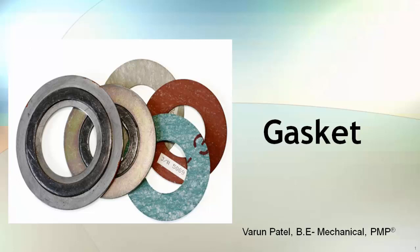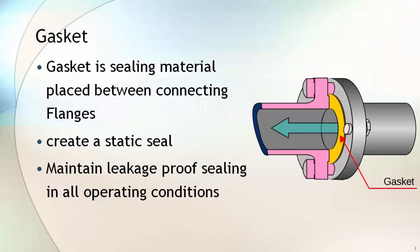Welcome. In this lecture we will cover various types of gasket used in process piping. A gasket is a sealing material placed between the connecting flanges to create a static seal. This static seal maintains leak-proof sealing in all operating conditions.